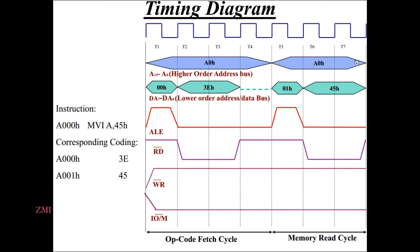We need the total opcode fetch cycle and memory read cycle. The M1 signal value is 0. We need the total opcode fetch cycle, memory read cycle, and memory write cycle — going from 0 to 1.